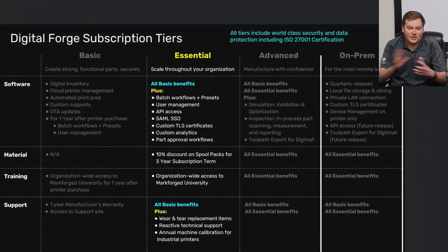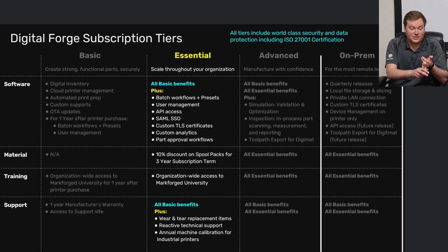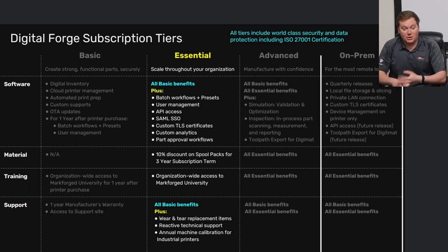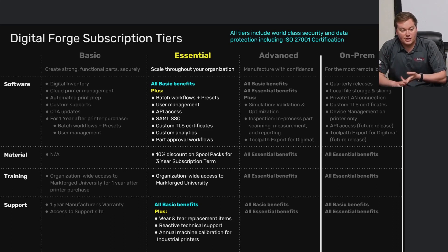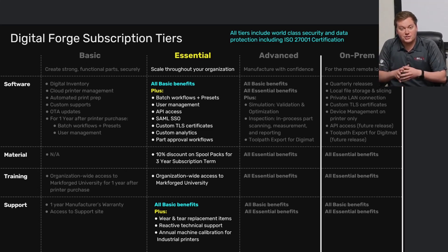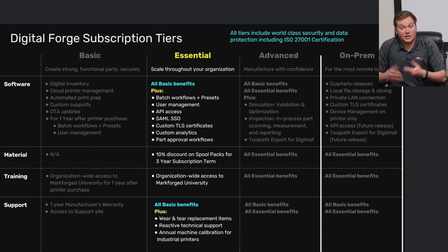The Essential tier takes everything from Basic — the batch workflows and presets, user management, role-based access control — but without the one-year limitation. Those features are extended through the entire length of the subscription. You also get additional features from Eiger Fleet: API access for linking your Eiger to other systems in your manufacturing environment, advanced security options like single sign-on and TLS certificate support.